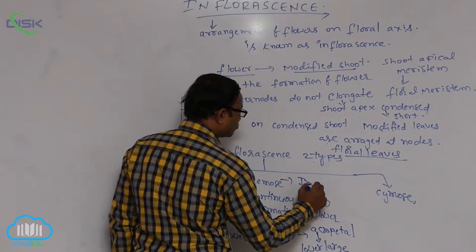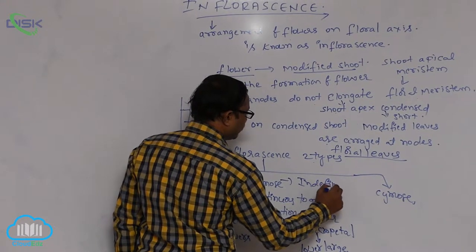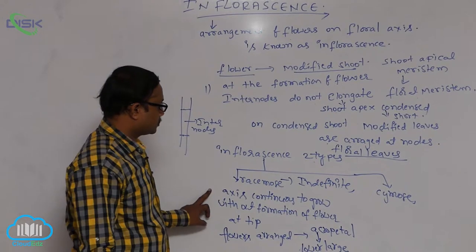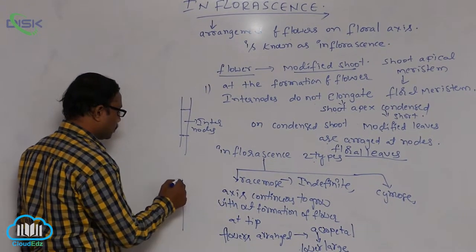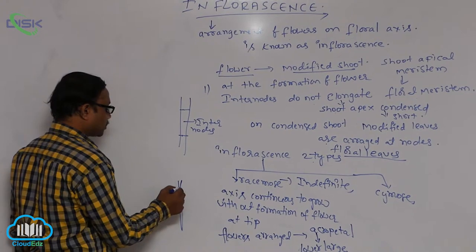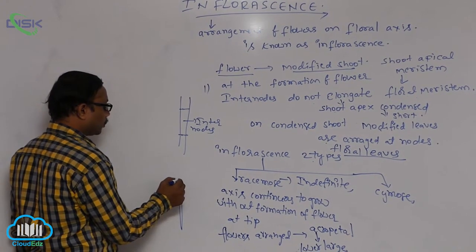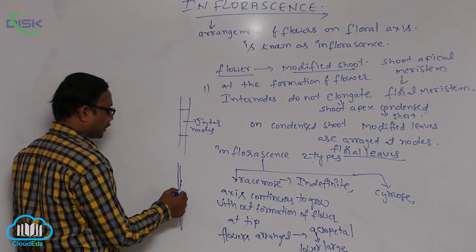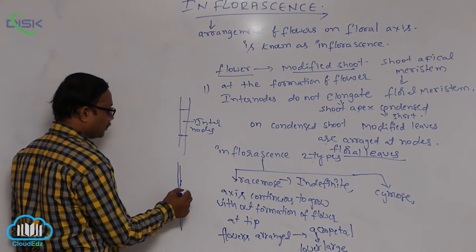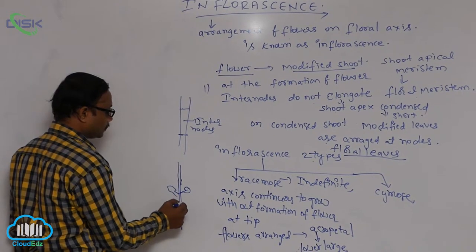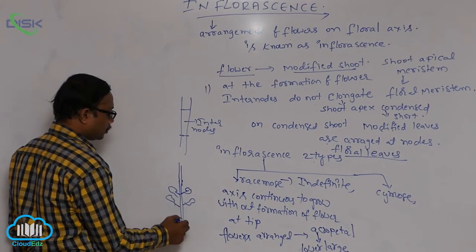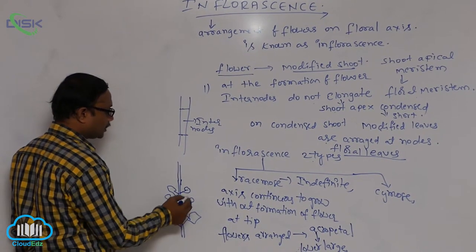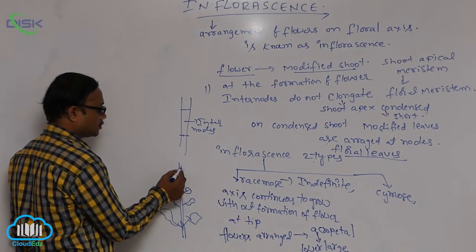In racimose inflorescence, the axis continuously grows — this is called indefinite growth. The axis keeps growing without forming a flower at the tip. Flowers are formed on the lateral sides of the floral axis.